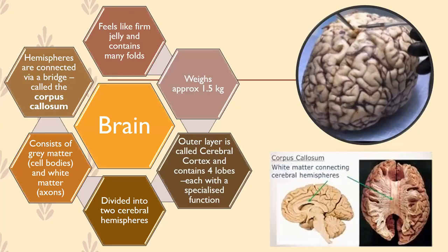Before we start looking at the early approaches to understanding the brain, we're going to look at a few of the key features or characteristics of the brain — just to understand what it is. When we're looking at the brain, we have to remember that the brain is the master organ. Literally everything that we think, feel, and do depends upon the brain.